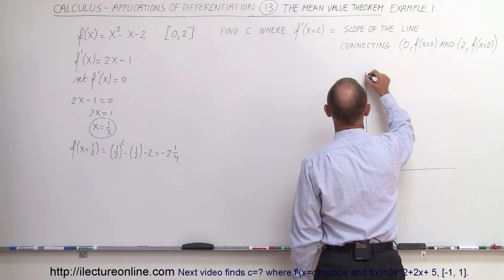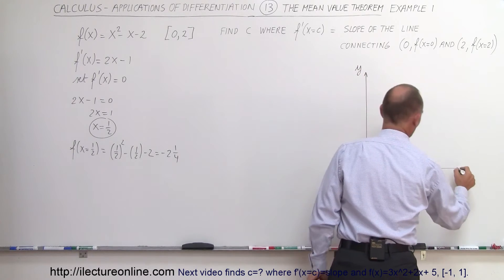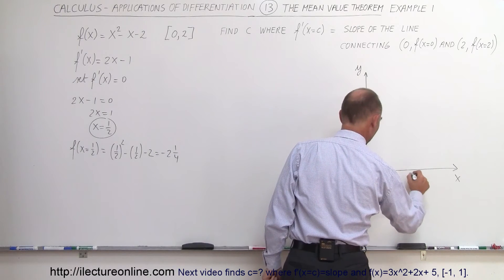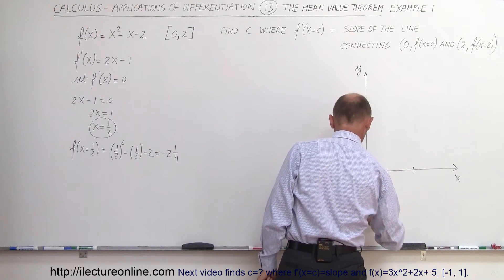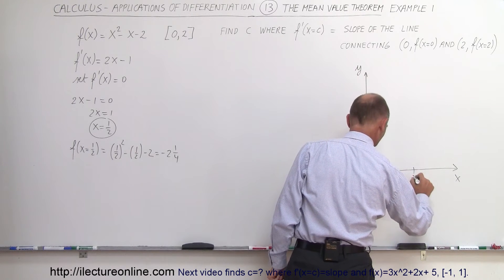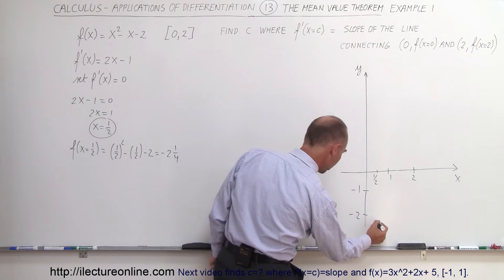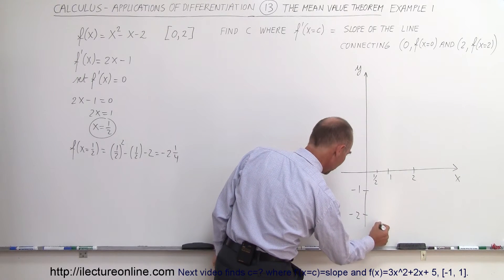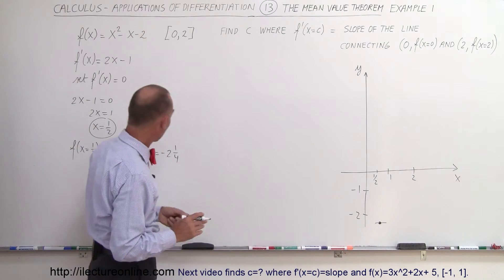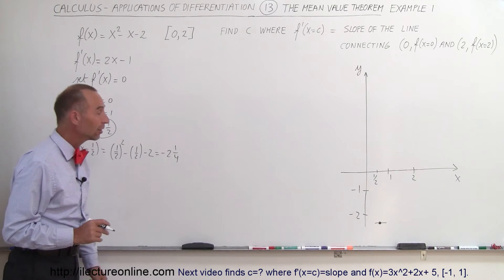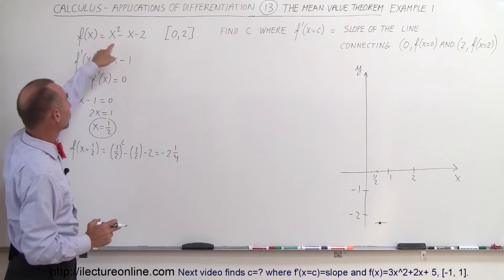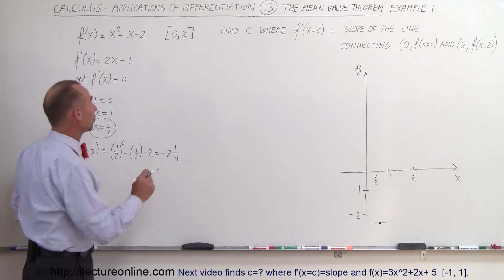Let's graph that. We have the y-axis and the x-axis. When x equals one half — let's say this is 1, this is 2, this is minus 1, minus 2 — y equals minus 2 and a quarter, so that point is right about there. We know that the slope there is 0 because that's where the derivative equals 0. Now we need to find the endpoints by plugging in 0 and 2 into the original function.